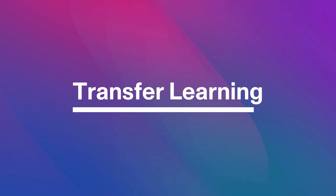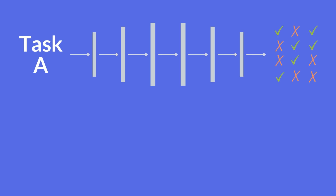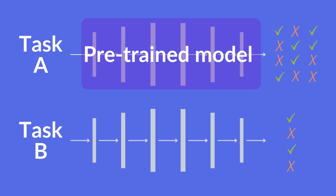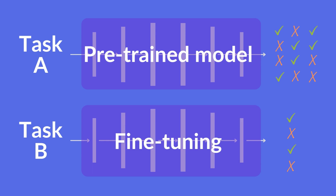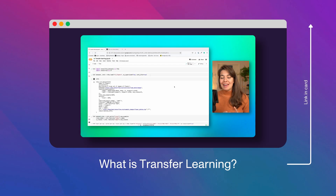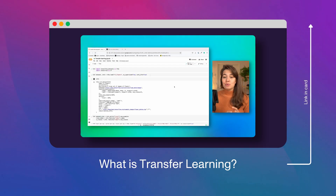Transfer learning is a machine learning paradigm where a model trained on one task is repurposed or fine-tuned for a different but related task. Instead of training a model from scratch for each specific task, transfer learning leverages knowledge gained from previous tasks to expedite and improve the learning process. In NLP, for example, pre-trained language models like BERT or GPT are often fine-tuned for specific tasks like sentiment analysis or named entity recognition. You can watch this video to learn more about transfer learning.